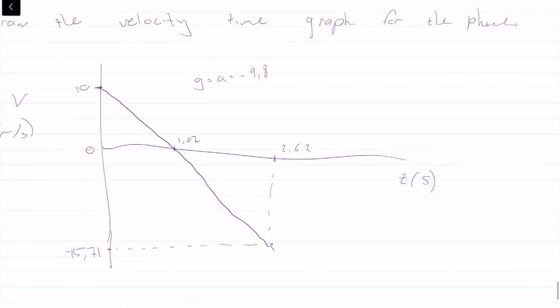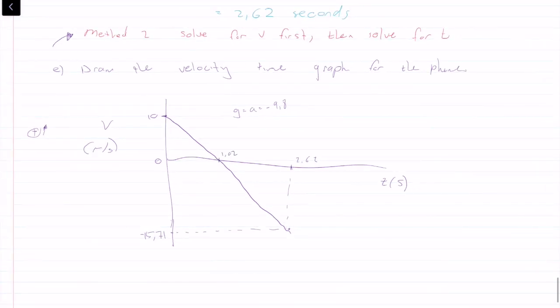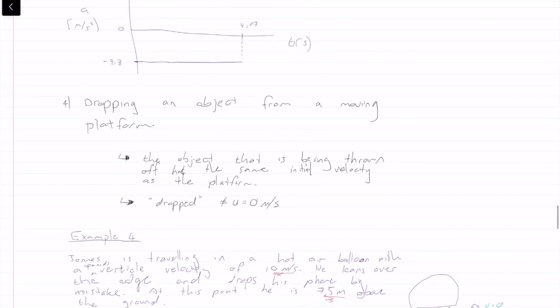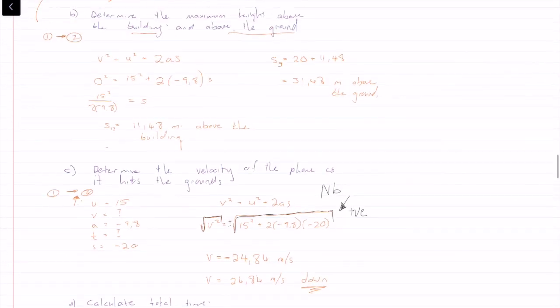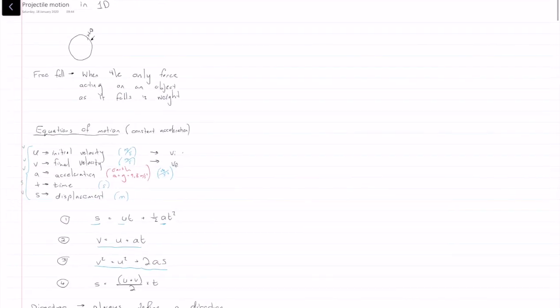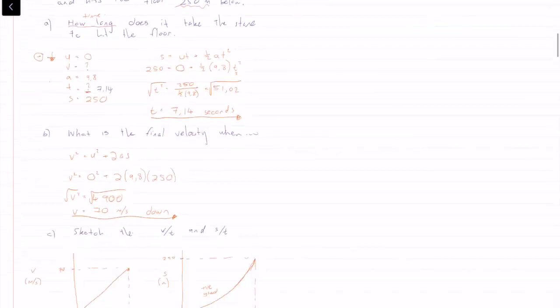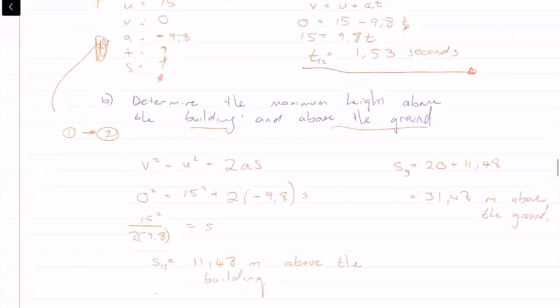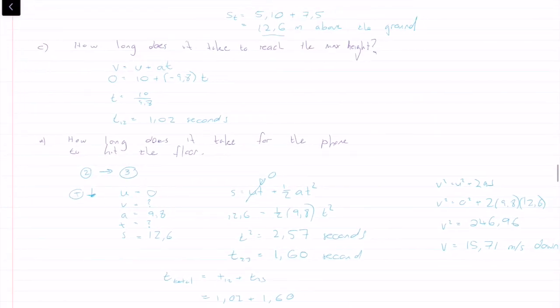That's this video done. There's another section called accelerating platforms — it's basically the same thing. I'm not going to cover it here, but if you want a video on that, send me an email or leave a comment. This is the end of the series on one-directional motion. Thanks for watching, I hope it was interesting and helpful.